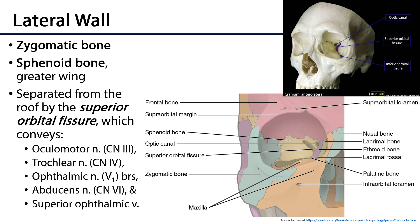The lateral wall of the orbit has two major constituents: the greater wing of the sphenoid bone, which is more posterior medial, and the zygomatic bone, which is more posterior lateral and lateral. This lateral wall is separated from the roof by the superior orbital fissure, which is quite a conduit between the middle cranial fossa and the orbit, conveying the bulk of the nerves to the orbit.